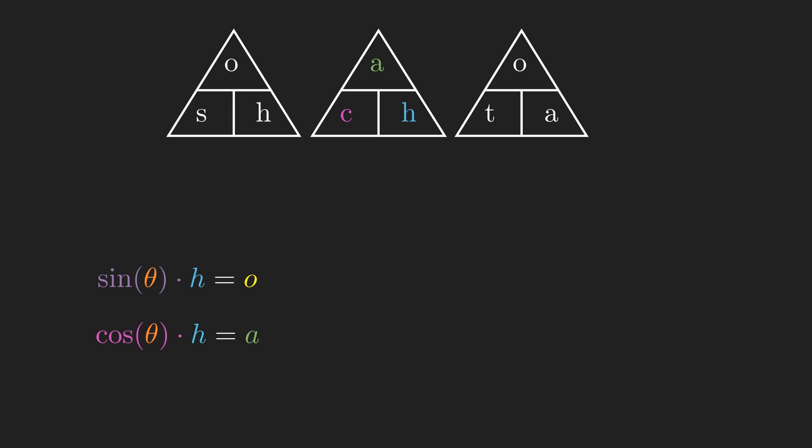Notice that both expressions now have our function multiplied by the hypotenuse of our triangle on the left-hand side. If we could find a way to make the hypotenuse equal to one, the equation would simplify down to have our sine and cosine functions on the left-hand side, and the side of our triangle on the other, the opposite for sine and the adjacent for cosine.